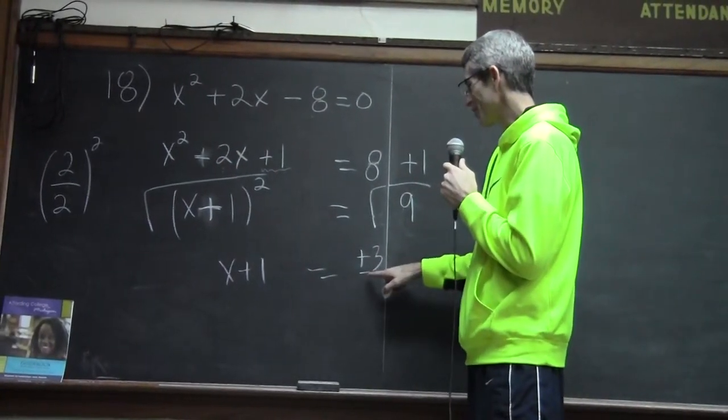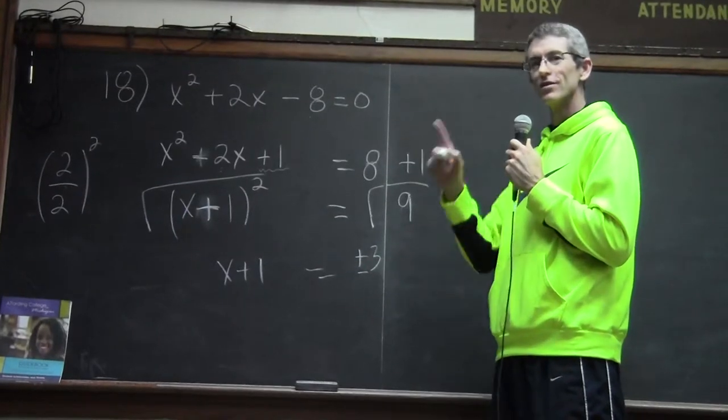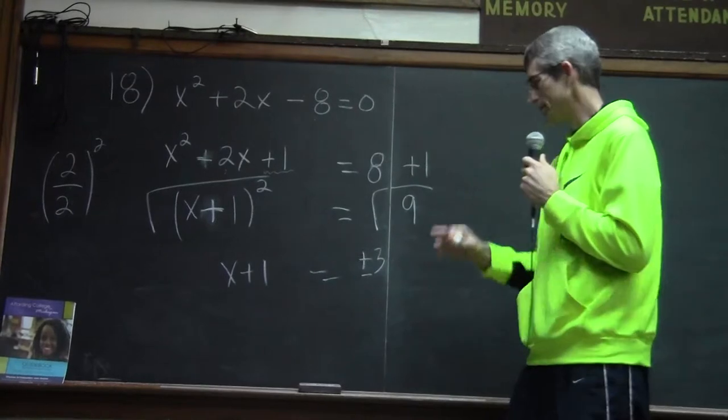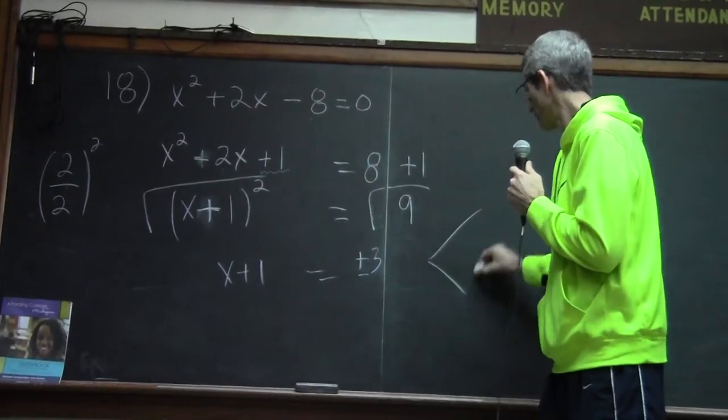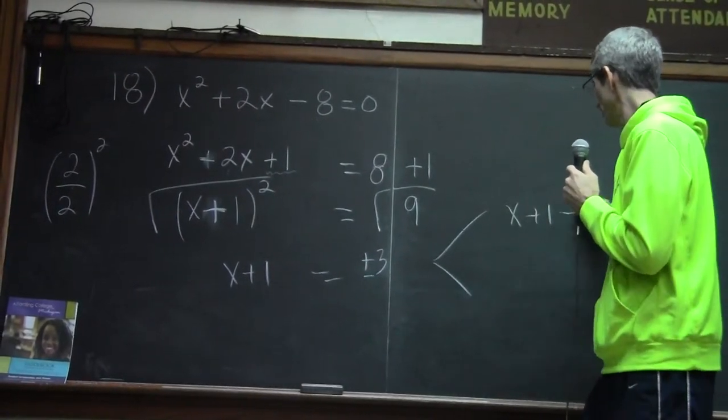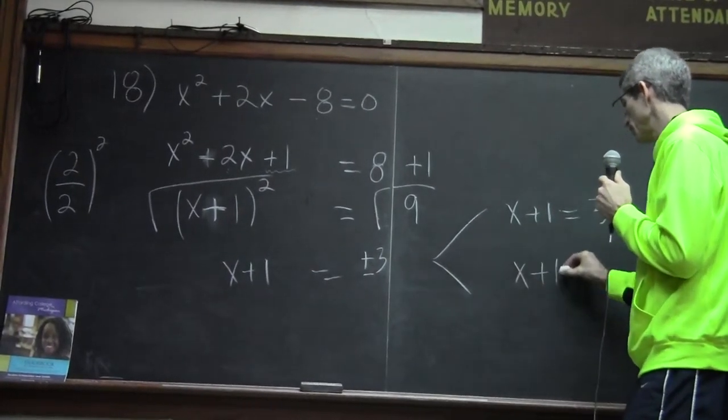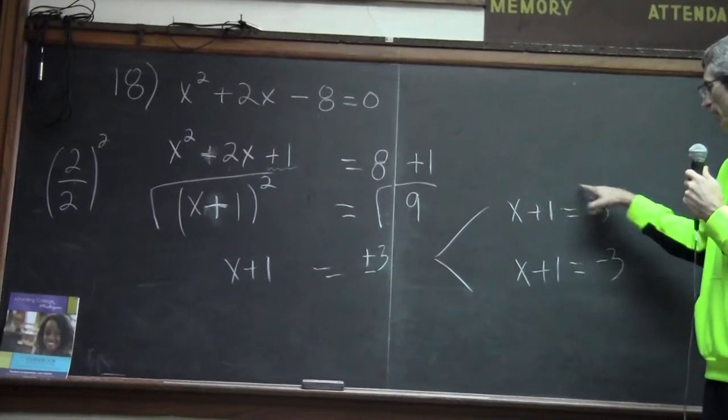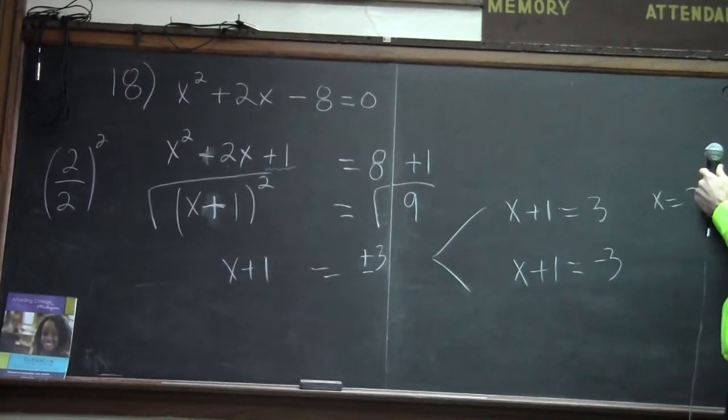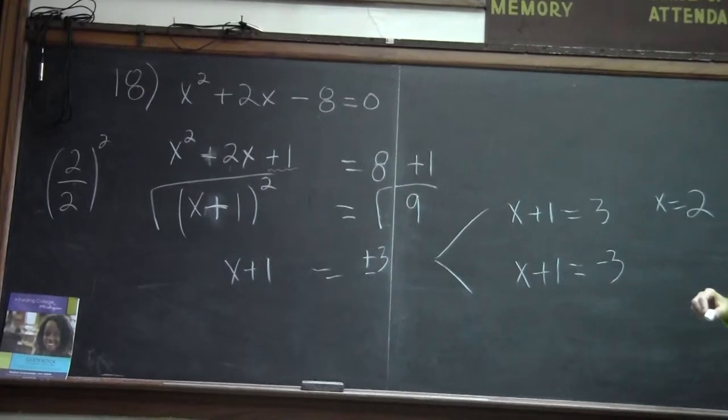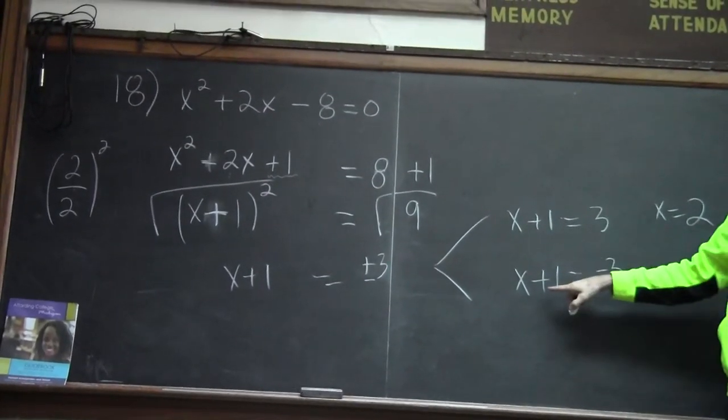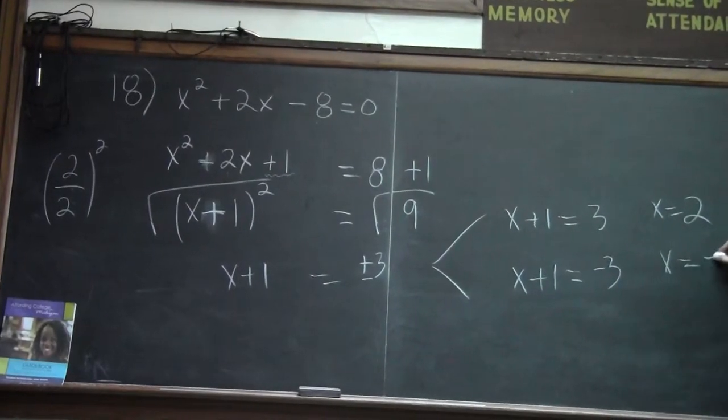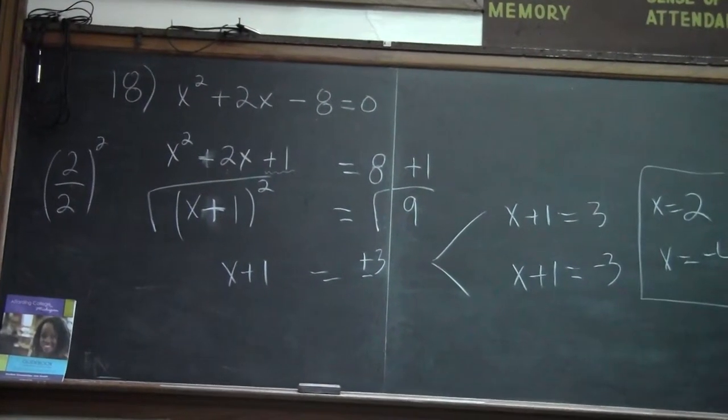So x equals, x plus 1 equals plus or minus 3. Since you have a plus or minus, you've got two solutions. So you have to do these two separate times. So you have one time where x plus 1 equals 3, and you have a second one where x plus 1 equals negative 3. So now, for this problem, you've got to add the 1 over. x is 2. Is that right? Yes? I'm glad you're following this. For this one, you're going to add the negative 1, and you're going to have x equals negative 4. So now I have my two x values.